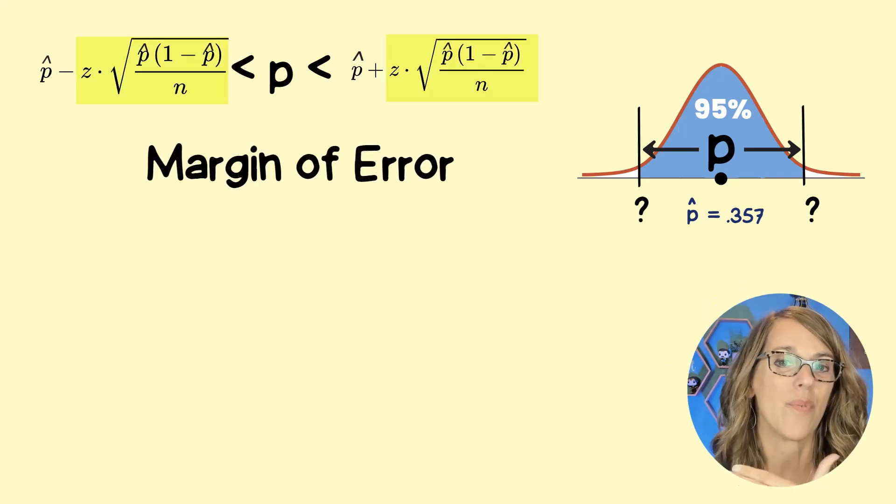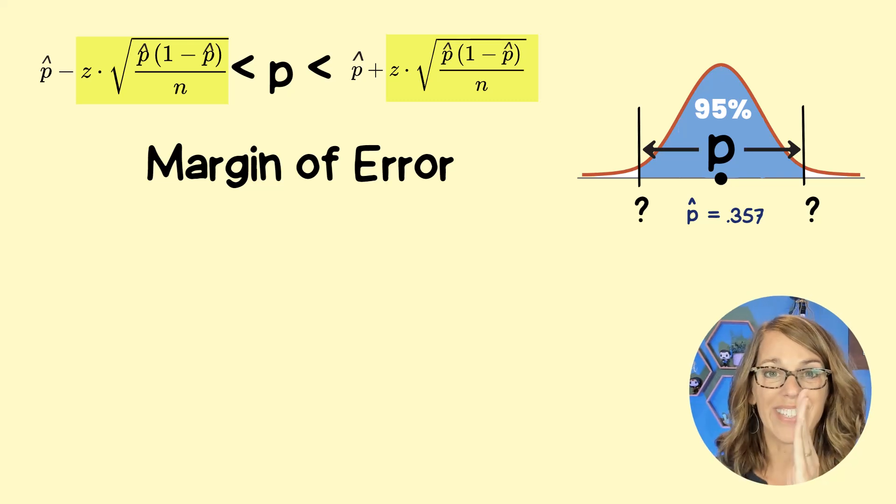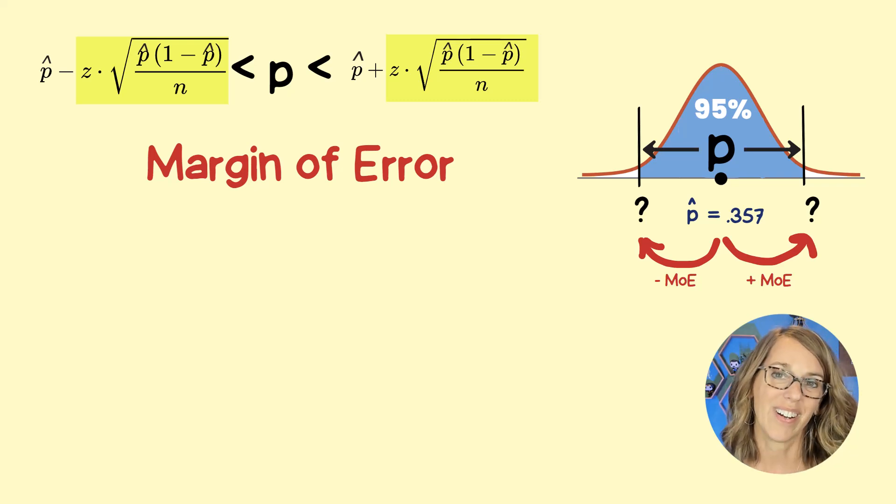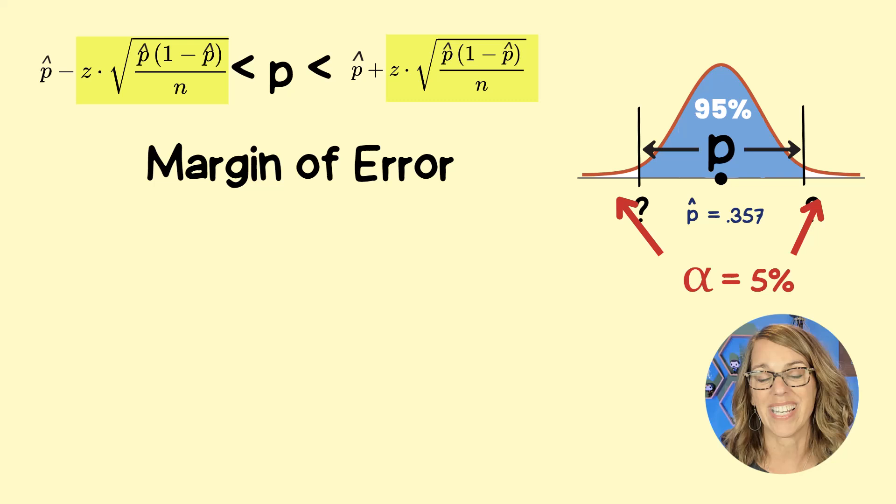We're actually going to start by looking at what I've got highlighted here. This is my margin of error. So this is how I go from my point estimate to my lower limit and from my point estimate to my upper limit. Notice it starts with a Z. So we need to figure out what our Z is.